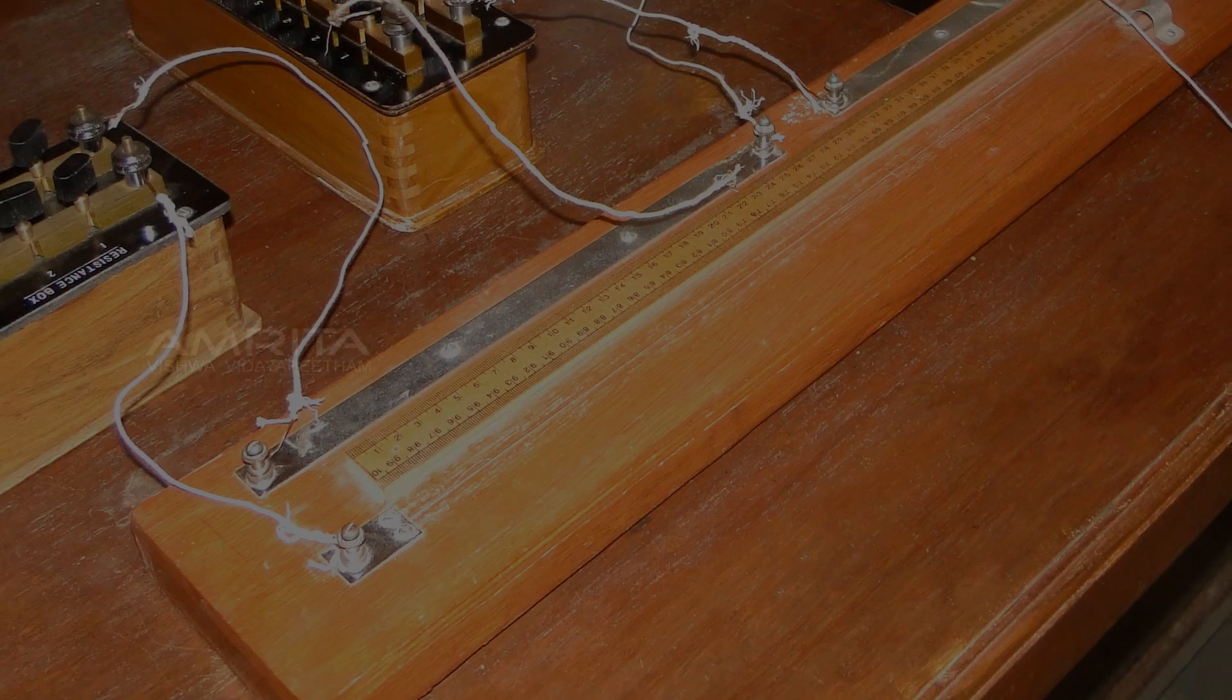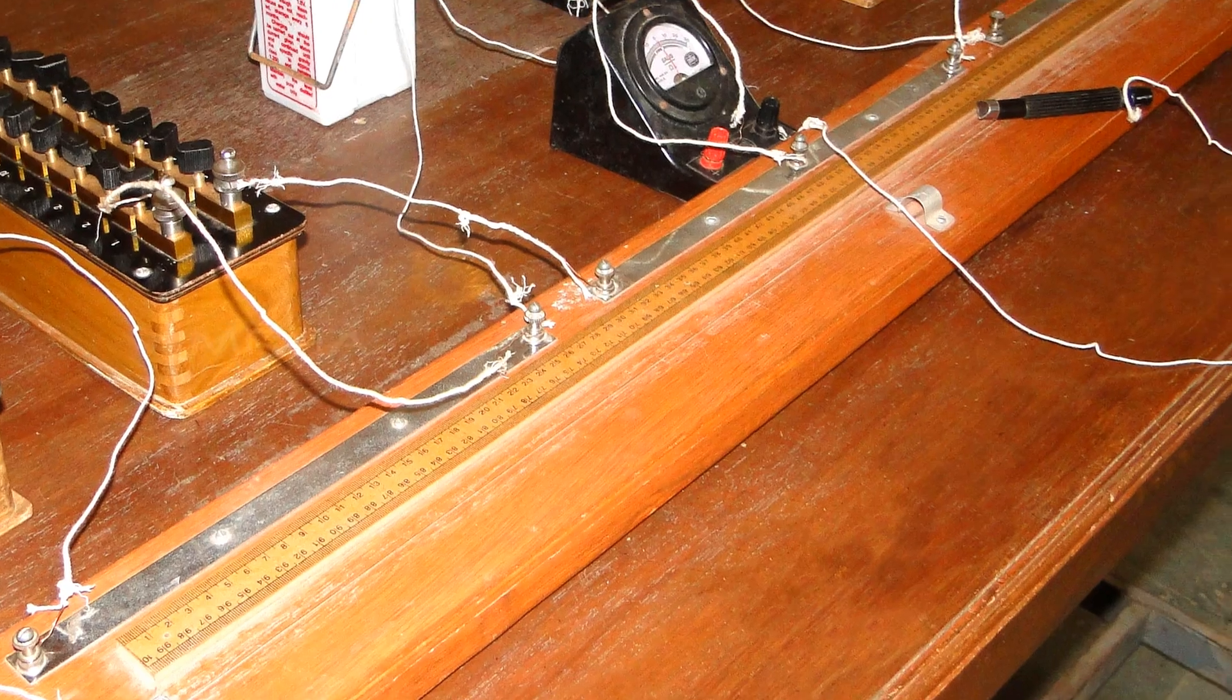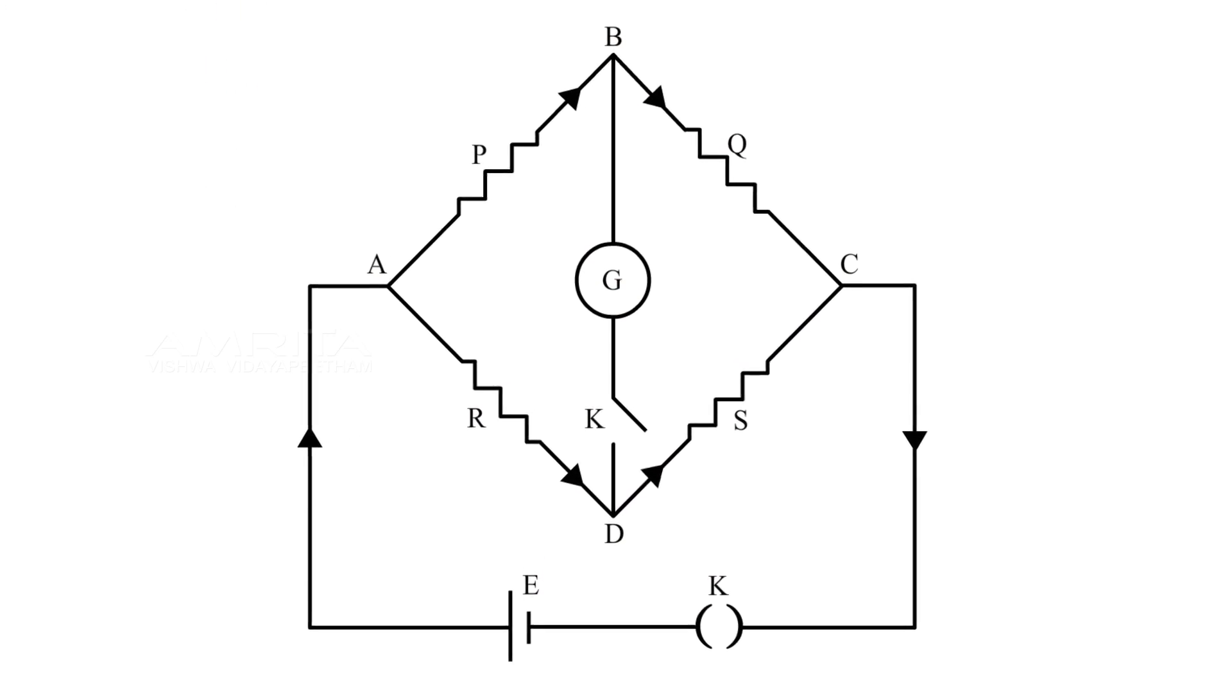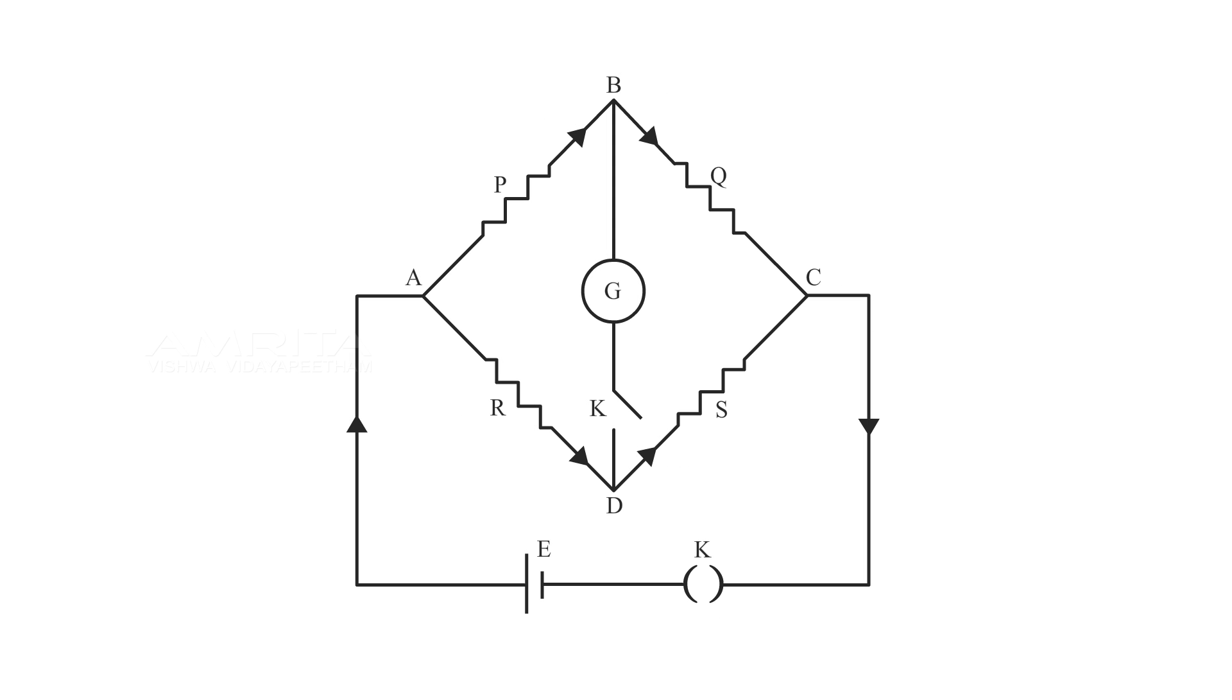Apparatus: The Carey Foster bridge. It is an electrical circuit that can be used to measure very small resistance. It works on the same principle as Wheatstone bridge which consists of four resistances P, Q, R, and S.